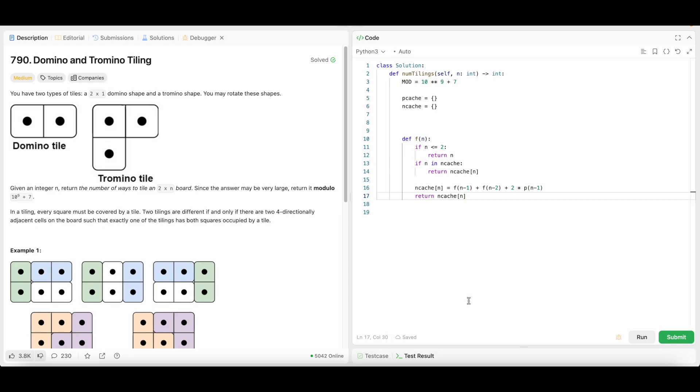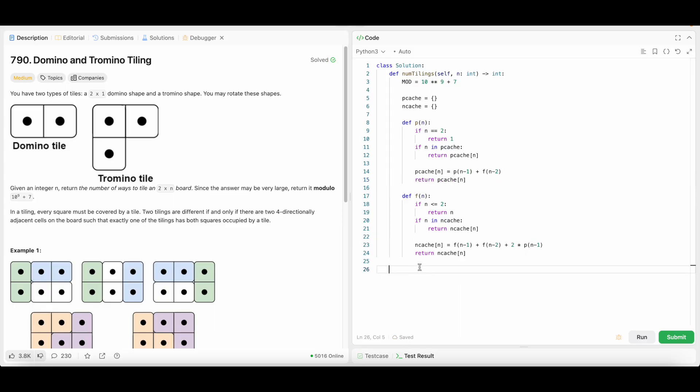But now I need to write the formula for p. So define p of n. If n is equal to our base case, then we return one. And if n happens to be in p cache, then we just return what's in p cache. And now we can use the formula for p. So p of n minus one plus f of n minus two. And then we can return p cache of n. And finally, we will return what's in f of n, modulo by mod.